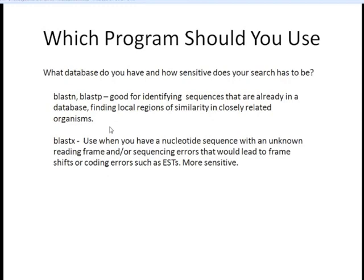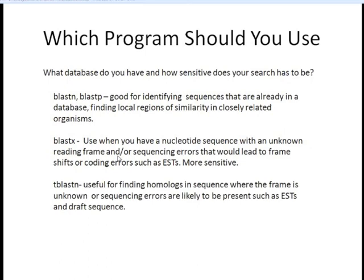TBLASTN is useful for finding homologs in sequences where the frame is unknown or sequencing errors are likely, such as ESTs or draft sequences. TBLASTX is used to detect novel ORFs or exons, but as mentioned, it is very slow. This should help people get started with deciding which flavor is the best one for their research.